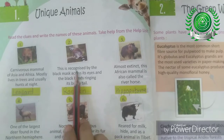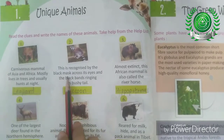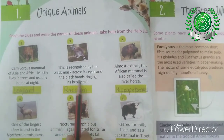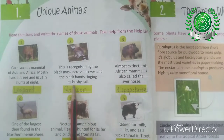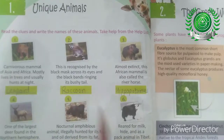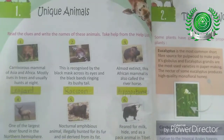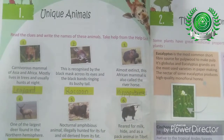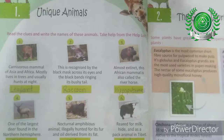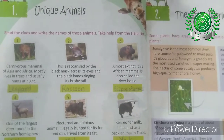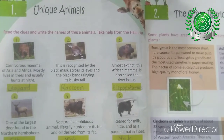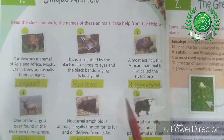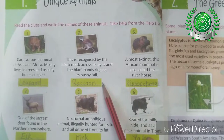This animal is recognized by the black mask across its eyes and the black band ringing its bushy tail. It has a black mask on its face and its tail is formed from black rings. This is called the Raccoon.